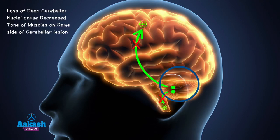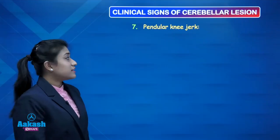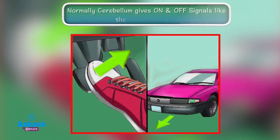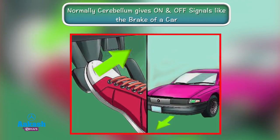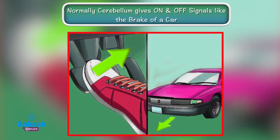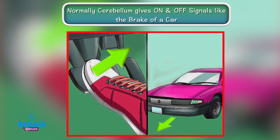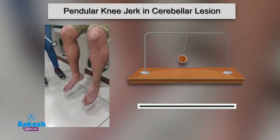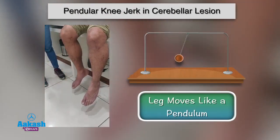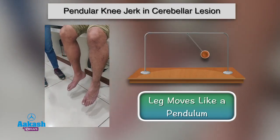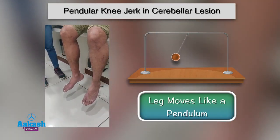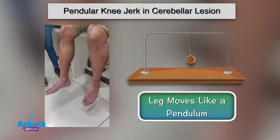The next sign is the pendulum reflex. As discussed, the cerebellum gives on and off signals like the brake of a car. In cerebellar lesion, when you perform a knee jerk, the leg of the patient will keep moving like a pendulum.